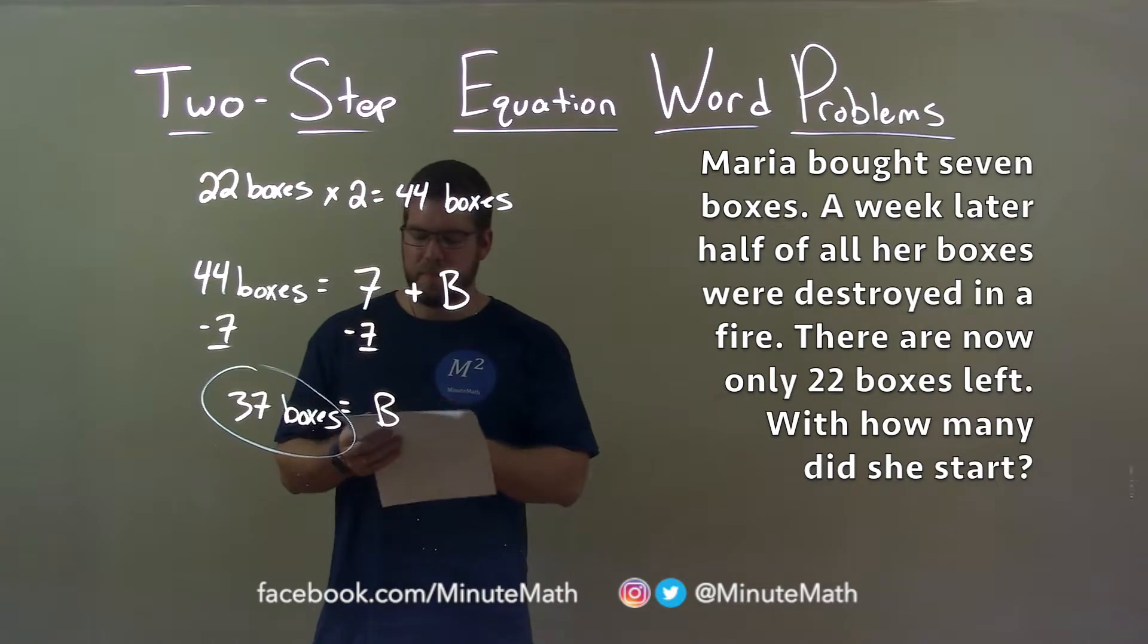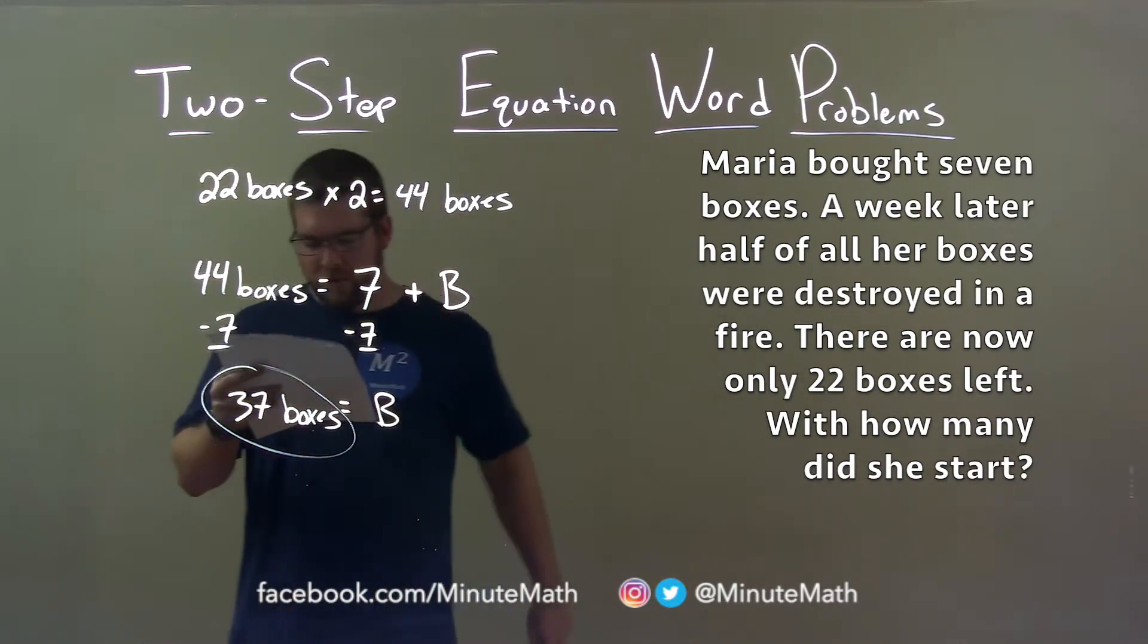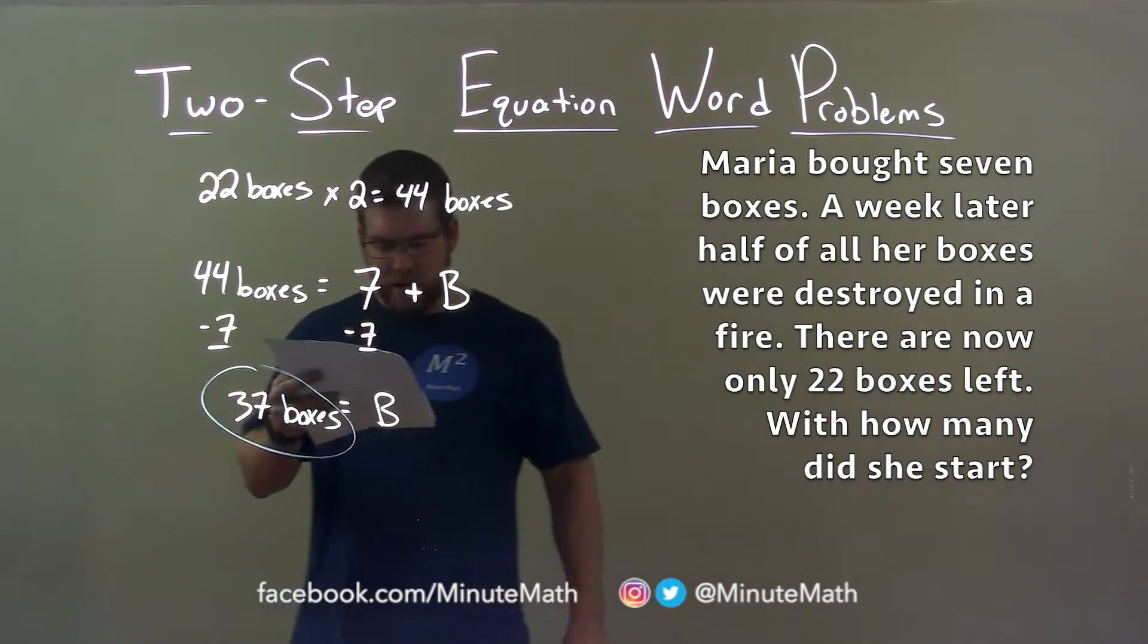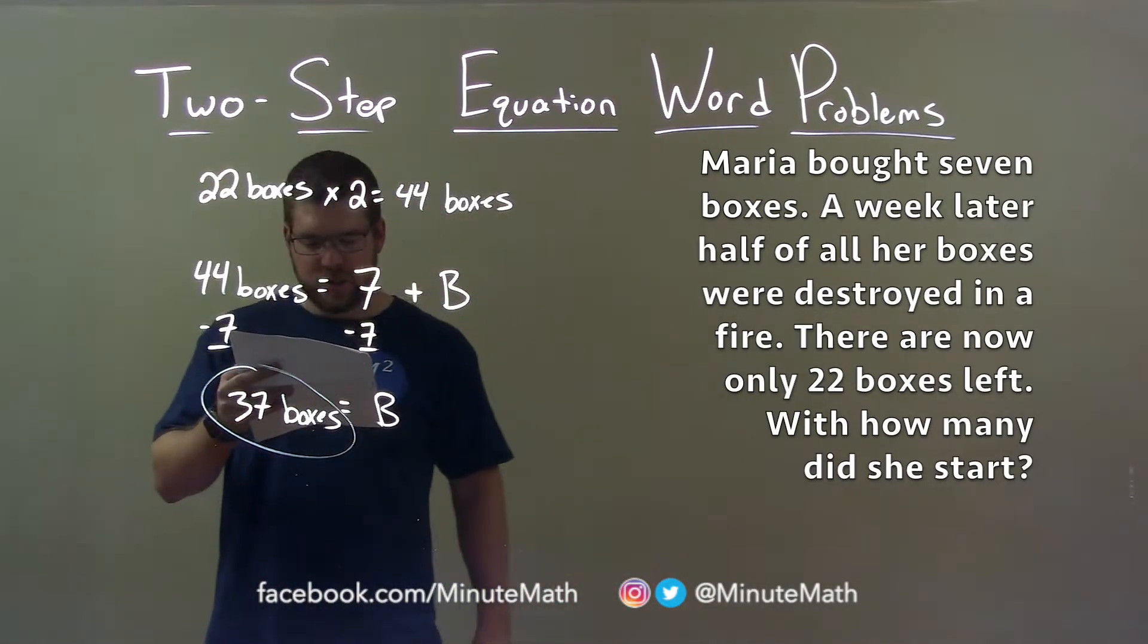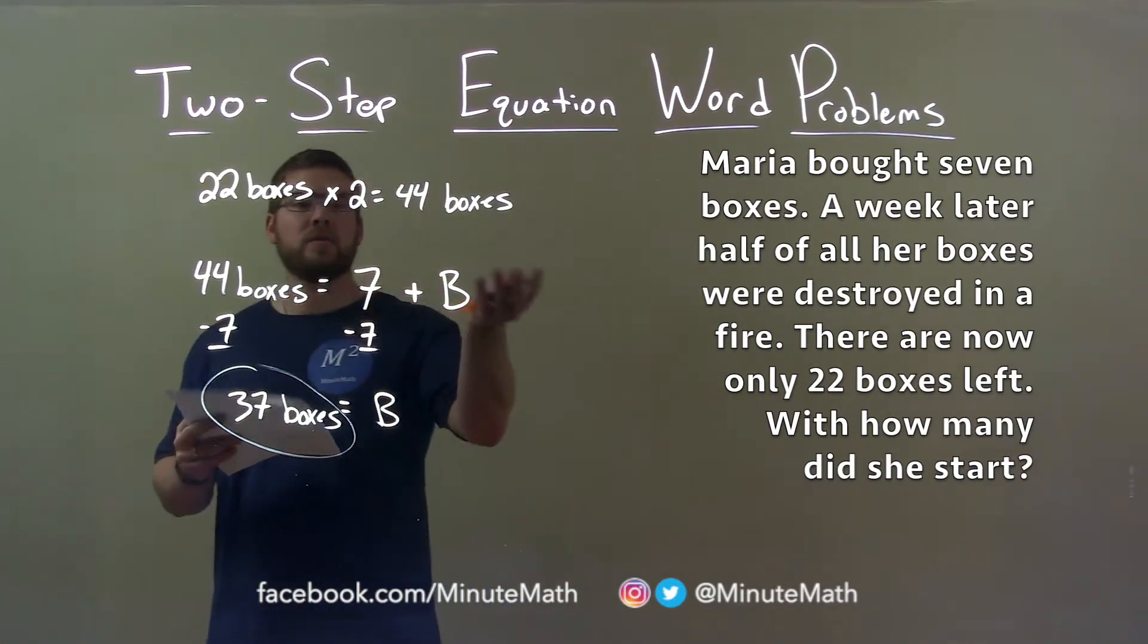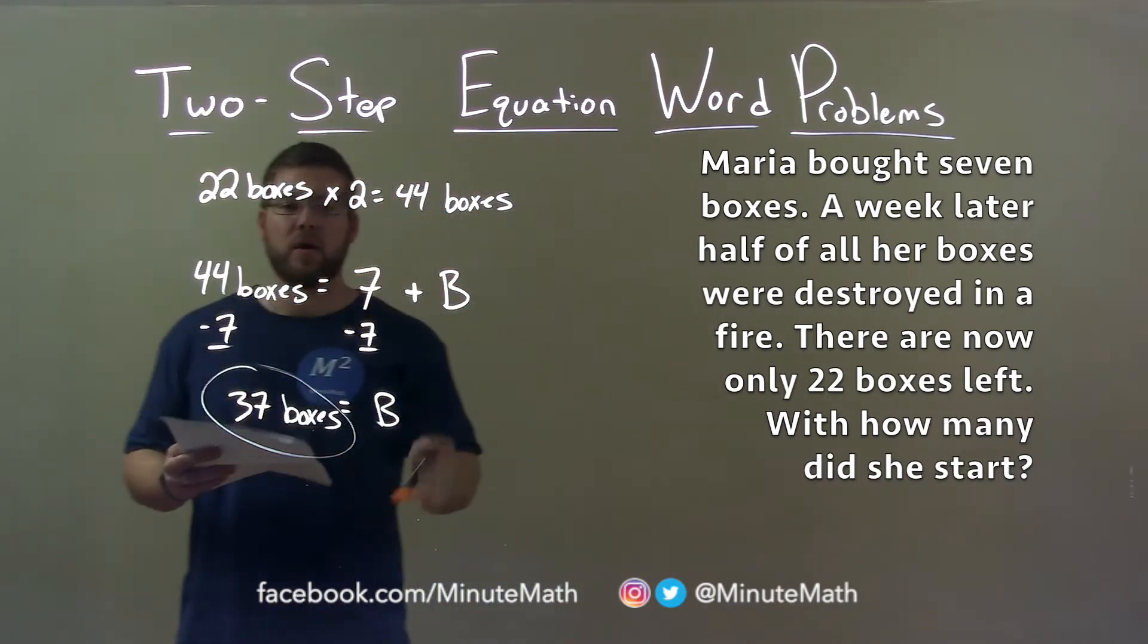Quick recap. Maria bought seven boxes. A week later, half of all her boxes were destroyed in a fire. There are now only 22 boxes left. With how many did she start? Well, 22 boxes was at the end. Half were gone in the fire, so multiplied by two, and she had 44 boxes before the fire.